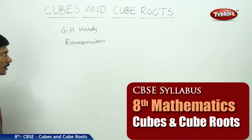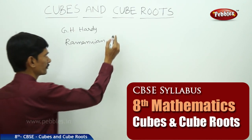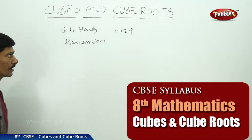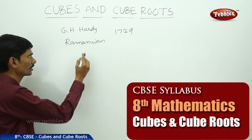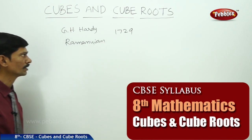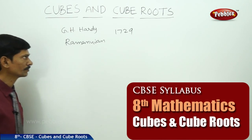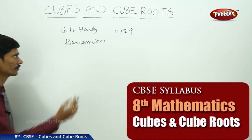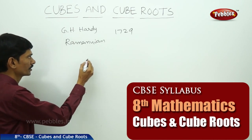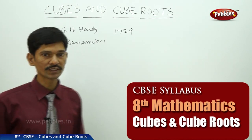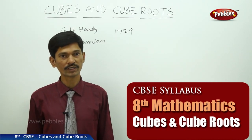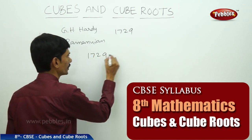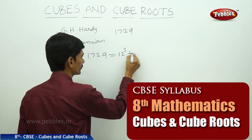G.H. Hardy told Ramanujan that the taxi number was 1729 and said it has no importance — that it is a dull number. But immediately Ramanujan replied that it is not a dull number. He described 1729 as the smallest number which can be written as the sum of the cubes of two natural numbers in two different ways.